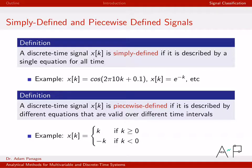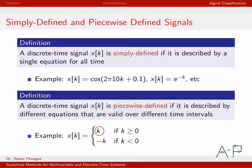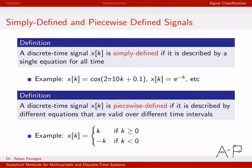Piecewise defined is just a little bit different. It has an equation described on different intervals, and we always use this bracket notation. It's piecewise defined because there are equations valid over different time intervals. For instance, x of k equals k for all k greater than or equal to 0, and x of k equals negative k for times less than 0. When we have piecewise defined signals, they're easy to identify because of this bracket notation and the stack of equations.